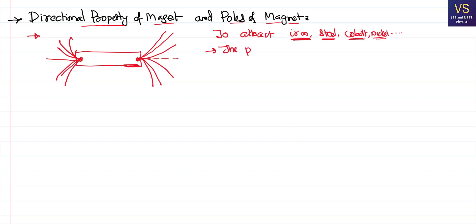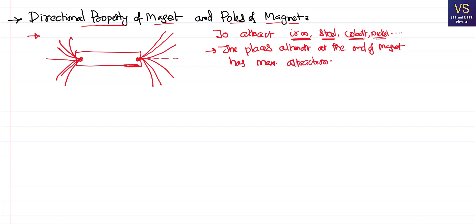So these are the places where the magnet has maximum ability of attraction. The places almost at the ends of the physical magnet have maximum attracting ability. These edges where there is maximum attraction ability are called poles.